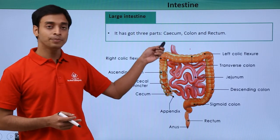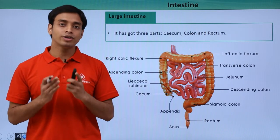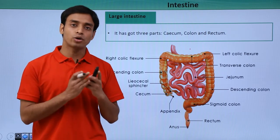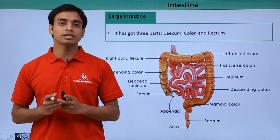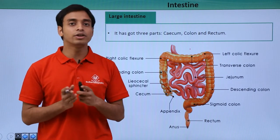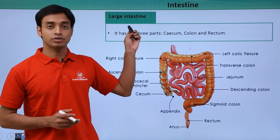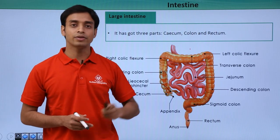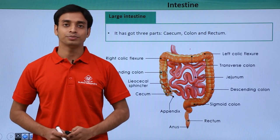In this video we have discussed the intestine — two important types: the small intestine and the large intestine. We discussed the structure and parts of the small intestine (duodenum, jejunum, and ileum), and the important parts of the large intestine (cecum, colon, and rectum). I hope you understood and liked this video. Thank you.